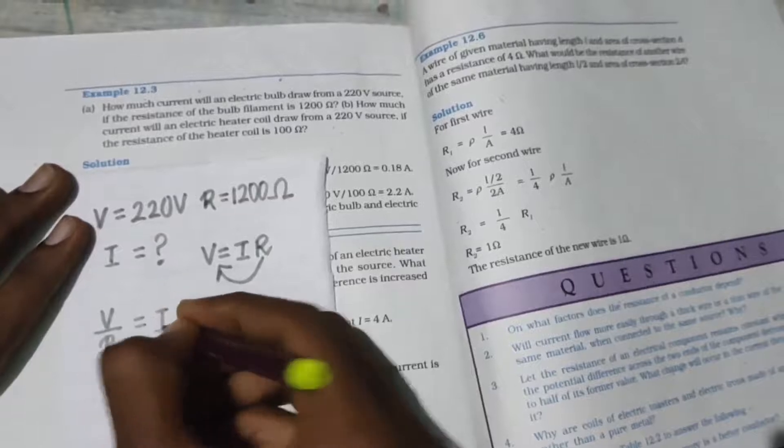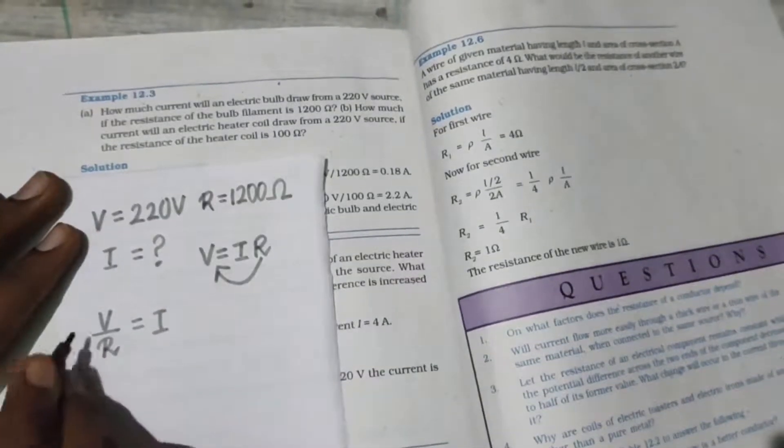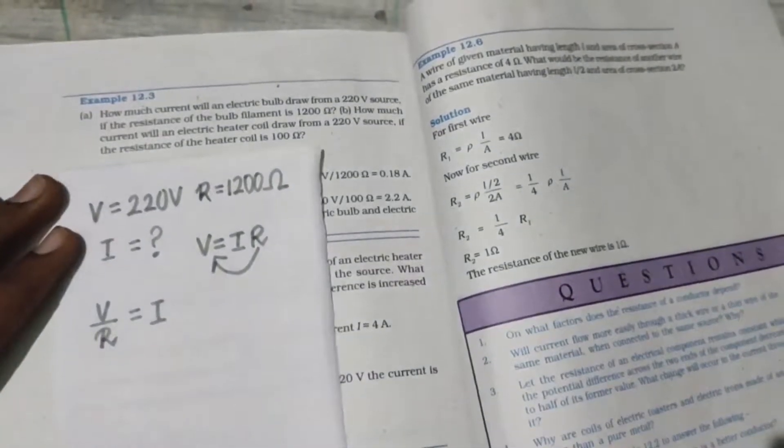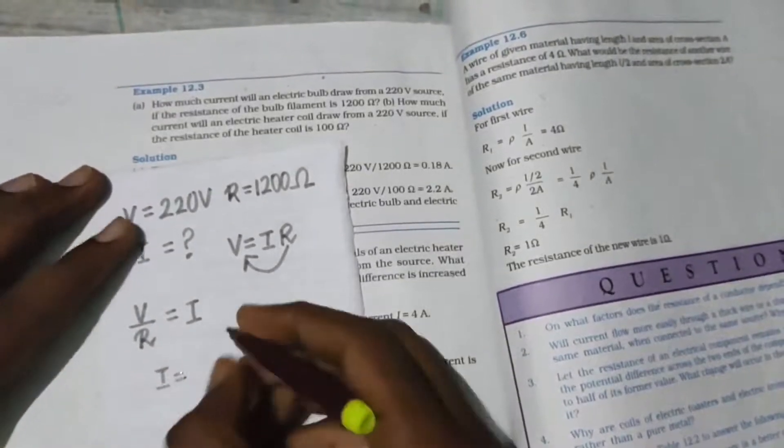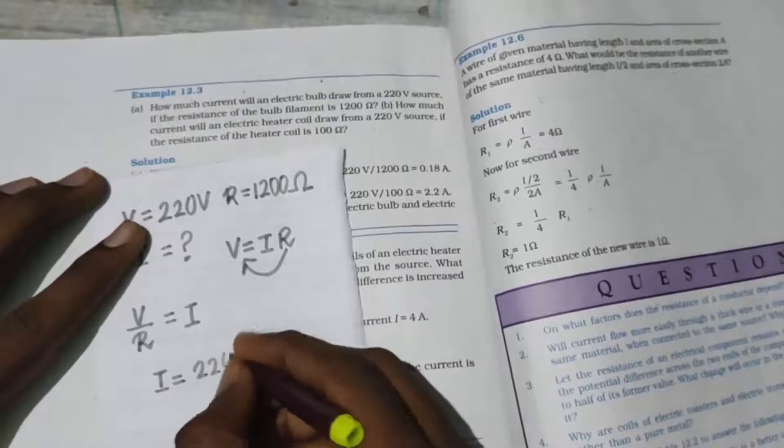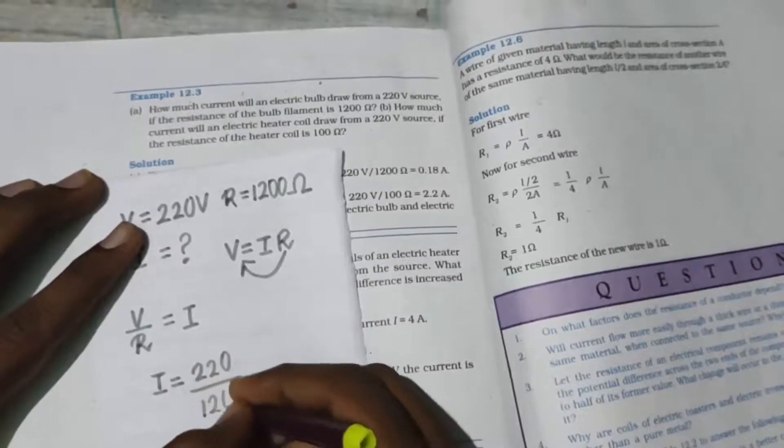Now you just have to substitute. Voltage and resistance, substitute them. Current is easier, right? So I = 220 divided by 1200.